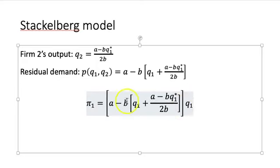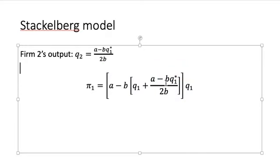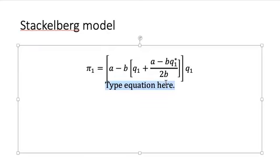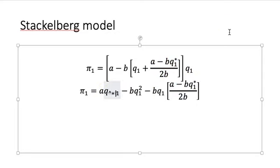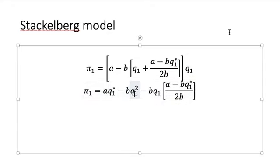Now it's just a matter of distributing Q1 and solving for the derivative. Let's try to simplify this function. So π1 is equal to AQ1 minus BQ1 squared minus BQ1 times the fraction A minus BQ1 star over 2B. We can add a star for consistency since this indicates we're looking at the leader firm's output.